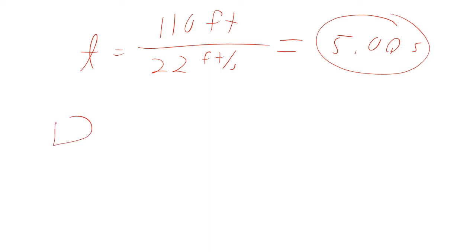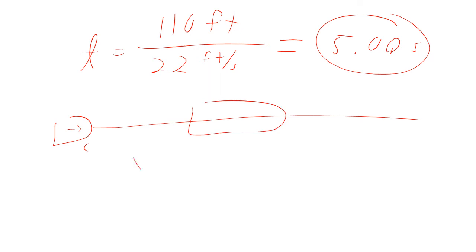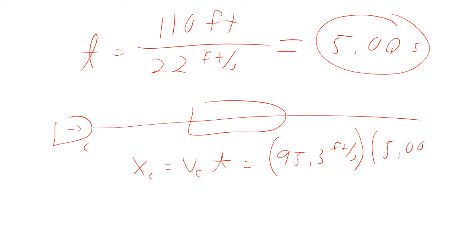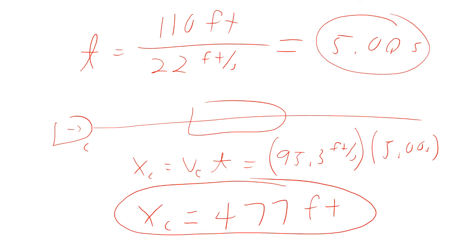How far did the car actually travel down the road while doing that? To find the distance the car goes, we use the car's velocity relative to the road times time: 95.3 feet per second times 5 seconds gives us 477 feet. So the car travels 477 feet down the road during the pass. That's how you do this problem. We're going to make it a little more complicated in the next problem — watch the next video.